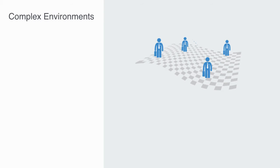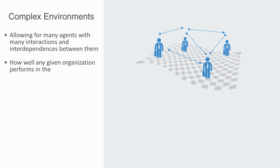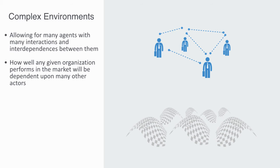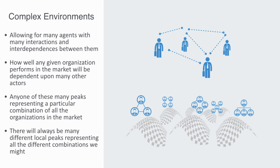Now let's turn up the complexity a bit by allowing for many agents with many interactions and interdependencies between them. When we have many different interdependencies, an agent's payoff will be dependent upon the interactions between a number of different variables. Take the example of a competitive market — how well a given organization performs will be dependent upon many other actors. Because there are many interacting parts, there will be many different optimal solutions, giving our topology a rugged form with many different peaks, with any one of these peaks representing a particular combination of all the organizations in the market.